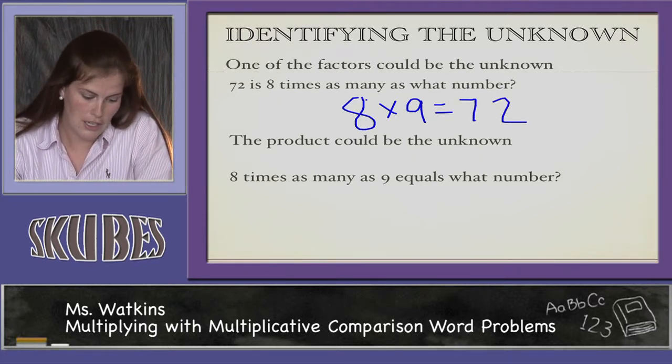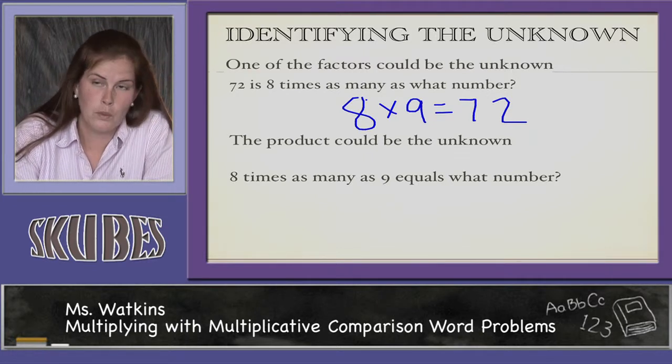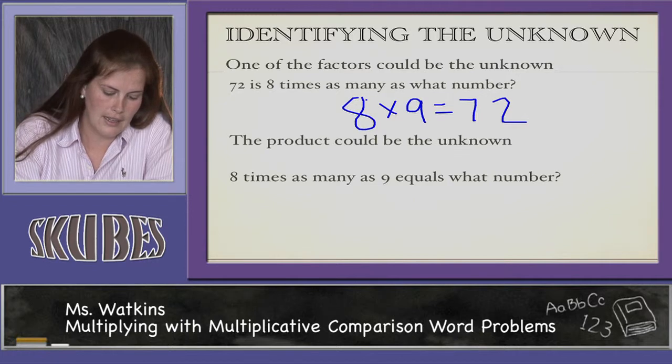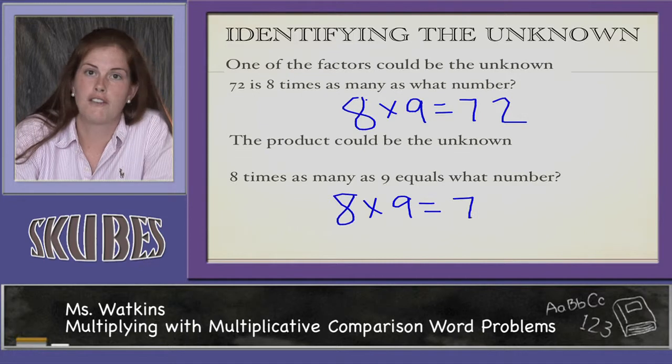The product could be the unknown. 8 times as many as 9 equals what number? Well, 8 times 9 equals 72. So that solves our unknown product.